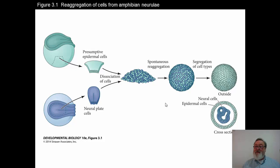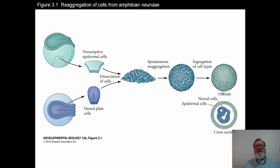One of the mechanisms to do that is a phenomenon called differential cell affinity. Cell membranes differ among different cell types. Some of the early work was done by an individual by the name of Holtfreiter, who did some work with frogs. Johannes Holtfreiter elaborated where he studied the re-aggregation of cells, and that's illustrated here. He found something very, very interesting.